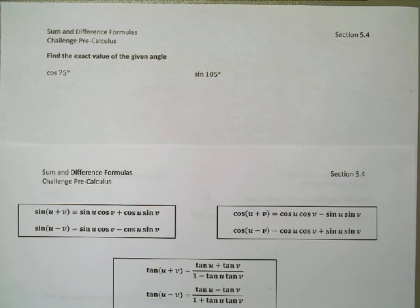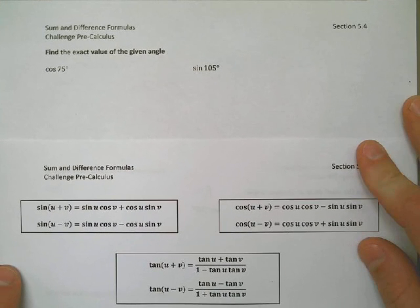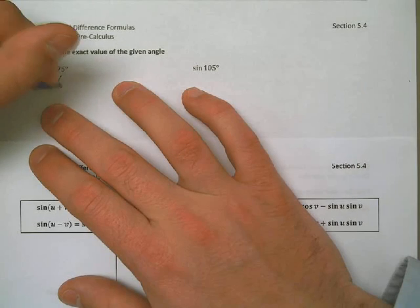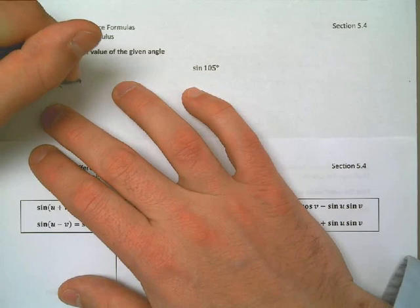Well, what I'm going to do first is I'm going to say, you know what, I'm not going to consider it to be 75 degrees because I don't know that. But I do know that I can get 75 from adding the two numbers, 45 and 30, which are common angles that we know. So I'm going to look at this first as the cosine of 45 degrees plus 30 degrees.